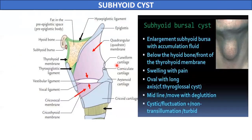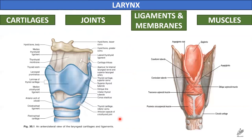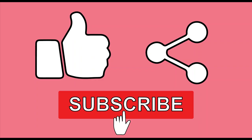Subhyoid bursitis can occur due to inflammation of the bursa in the subhyoid position, located between the hyoid bone and the thyrohyoid membrane, and can present as a midline swelling in the neck. This concludes the applied anatomy of the larynx — commonly known as the voice box — whose skeleton is made up of cartilages, joints, ligaments, membranes, and muscles.